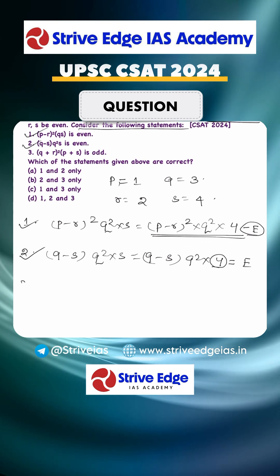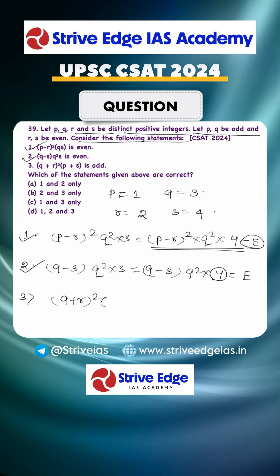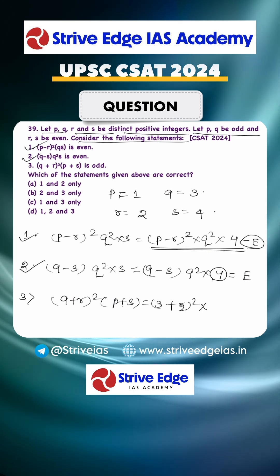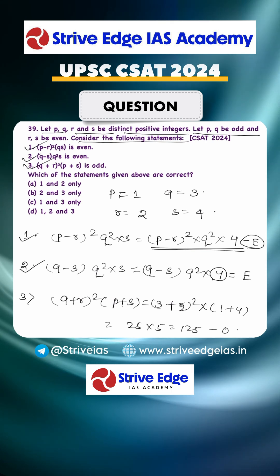We will check the third condition. What is the third condition? It is given that third condition is Q plus R square into P plus S is odd or not. Q is 3 plus R is 2 square into P is 1 plus 4. So it is 25 into 5, so 125, it is odd. Third condition is also satisfying.